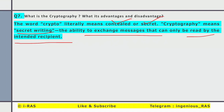Crypto basically means concealed or secret. Cryptography means secret writing — the ability to exchange messages that can only be read by the intended recipient. It is basically encryption: to save our messages from any third party intervention, third party breach, or any breach of privacy. We use encryption to protect our data and messages. That is known as cryptography.